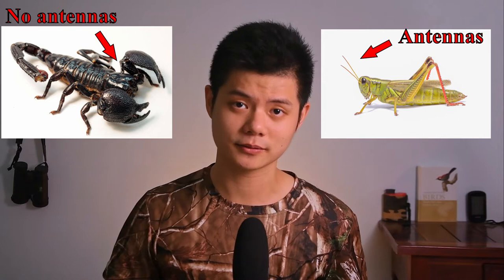Method number three: look out for antennas. Insects like grasshoppers, butterflies, and moths have antennas, while arachnids like scorpions do not have antennas.